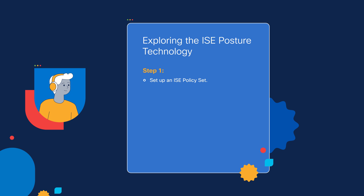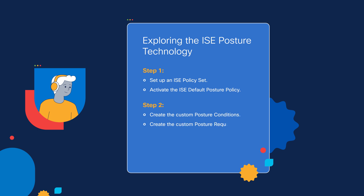Before we do this, we need to go ahead and configure or enable a posturing policy. There are defaults already built into the system. So if you just want to verify that the user has an antivirus software installed and that it's running on the system, you can simply activate a default posturing policy. However, when we move on to step number two, this is where we get a little bit more into the customization.